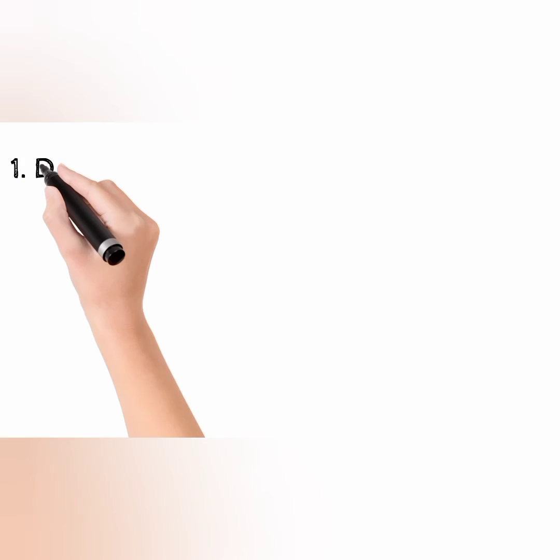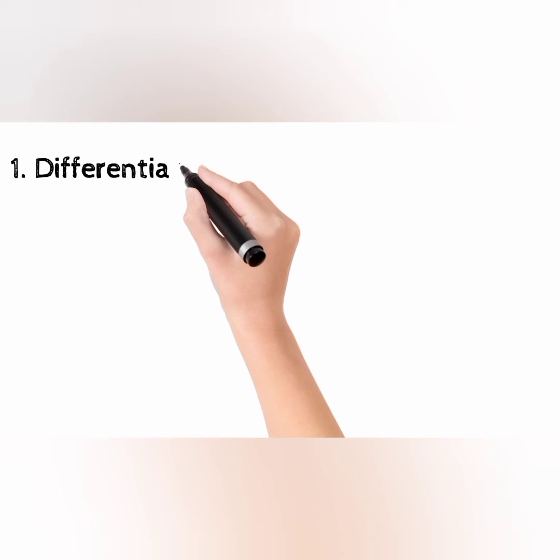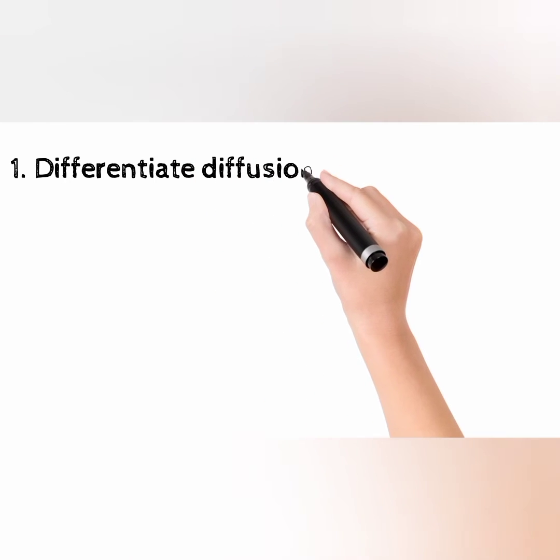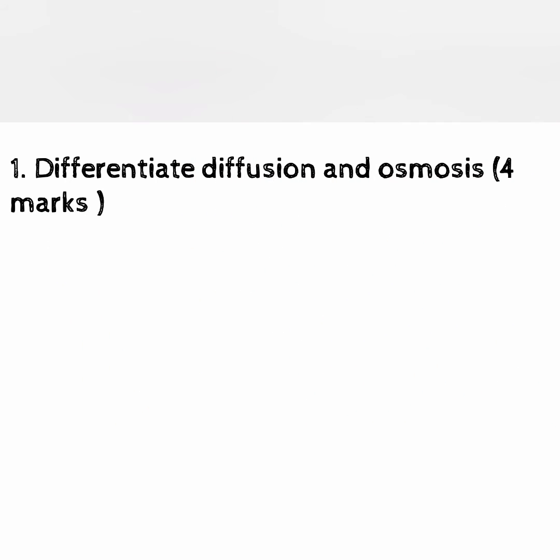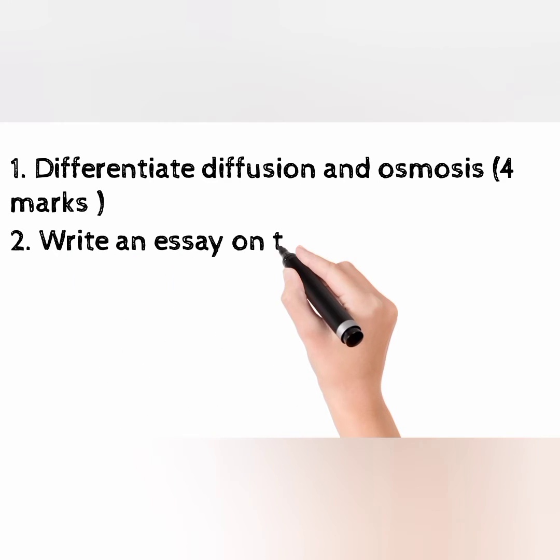Hey, welcome to the world of KUBSC Botany Exam Help. Today we have a video on some important questions on plant physiology for S6 core botany students. Question 1: Differentiate diffusion and osmosis — 4 marks. Question 2: Write an essay on the topic 'Water: The Elixir of Life' — 15 marks.